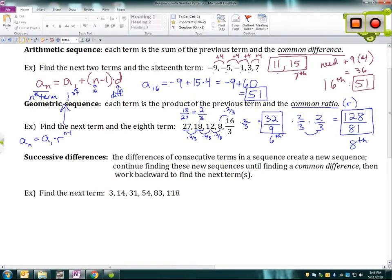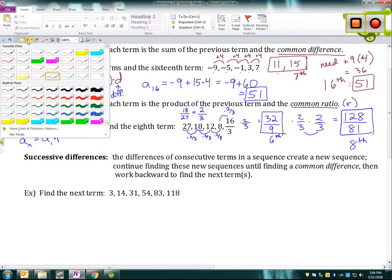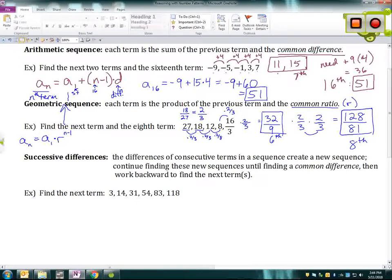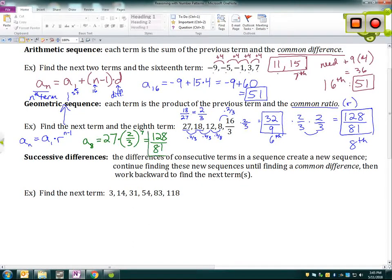So for our example, the eighth term, so a sub 8 is equal to a sub 1, which is 27 times, and then our common ratio is 2 thirds, and we are raising that to the n minus 1, so that's going to be the seventh. And I already know what that's going to be, so I don't need to compute. It's going to be 128 over 81. So again, either way that we want to do this, either by continuing to find the consecutive terms till we get to the one we need, or by using the explicit formula will work. I will recommend that you commit both of these formulas to memory, because these are important ones that show up frequently.